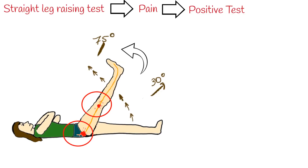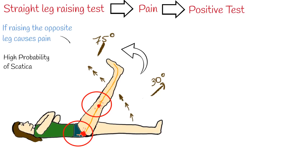This test has high sensitivity but low specificity — meaning if sciatica is present, raising the leg will with high probability cause pain. However, if raising the opposite leg causes pain, known as the cross or contralateral straight leg raising test, it increases the probability of sciatica specifically, because this test has low sensitivity but high specificity.